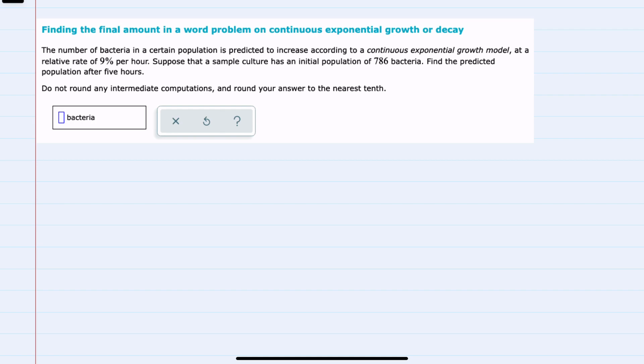For this example, we're looking at the number of bacteria in a certain population that is growing with continuous exponential growth at a rate of 9% per hour. We know the initial population is 786 bacteria, and we're looking for the population after 5 hours.